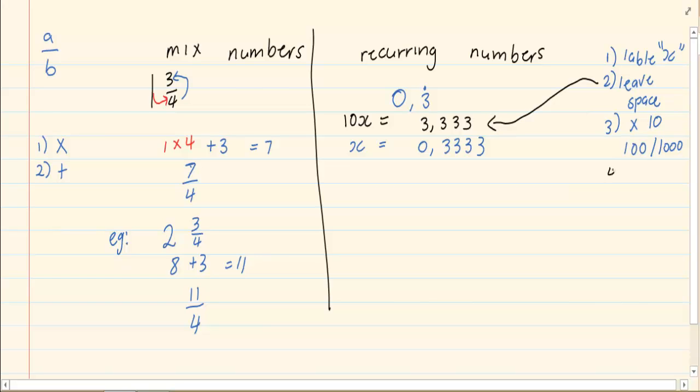Then you are going to subtract. I am going to say 10x minus x is going to equal to 9x. 3.333 minus 0.333 is equal to 3. Now you solve for x. Divide by 9 and we have got x is equal to 1 over 3.